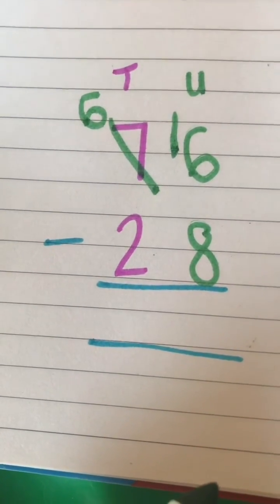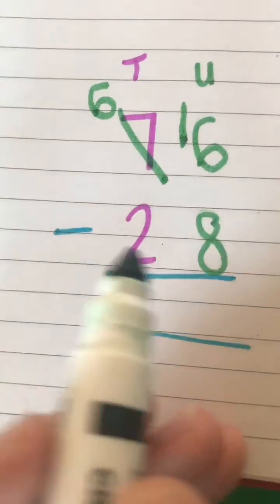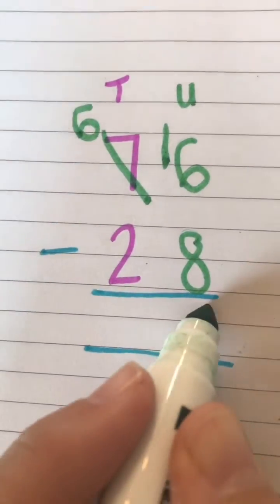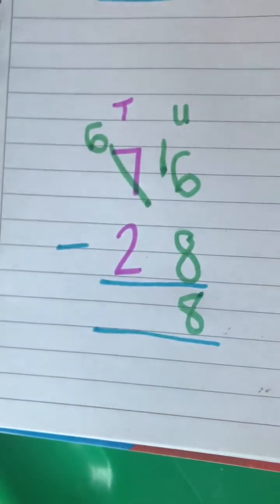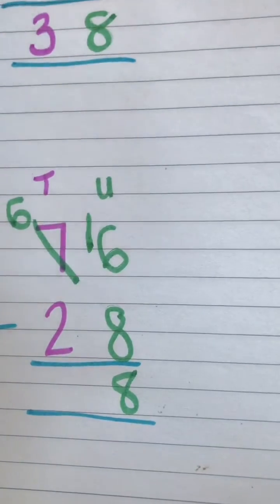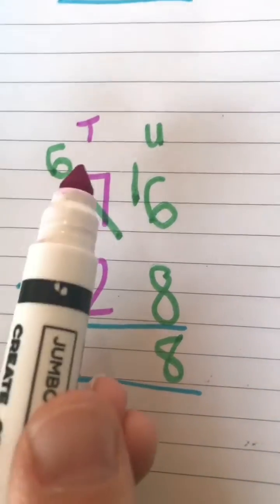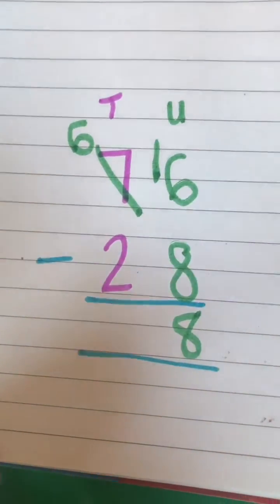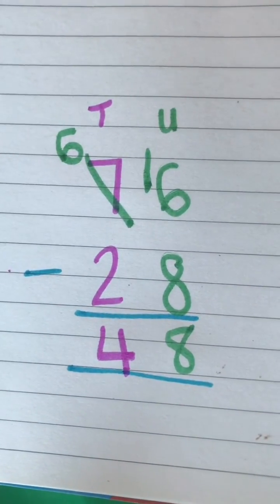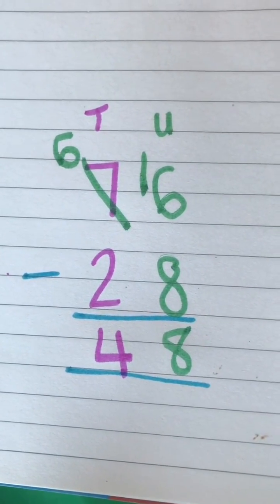minus 8 is 8, okay? Then I've done that column. Now I can move over to my tens column, and I've got 6 minus 2. That I can do, which gives me 4. Okay, so 76 minus 28 is 48.